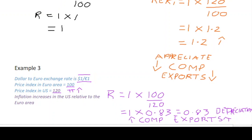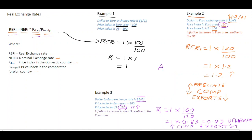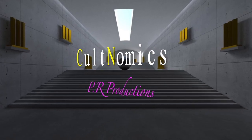Overall, the real exchange rate takes into account not only the nominal exchange rate but also the price levels in the domestic country and the comparator foreign country. When inflation rates change, as we saw in both examples, the impact on the real exchange rate is important because it can determine the competitiveness of the country, which in turn affects the export base. This filters back into aggregate demand and can shift expenditure in the economy. I hope you come back to Cultnomics soon — bye for now.